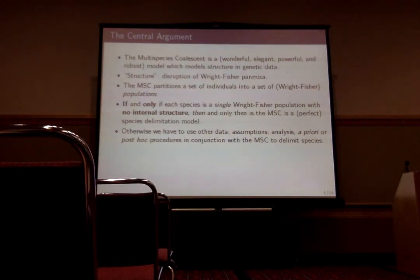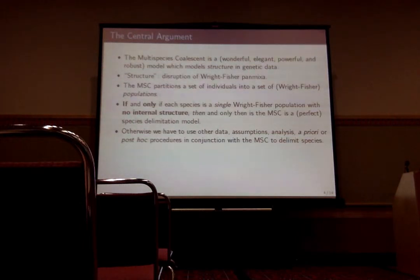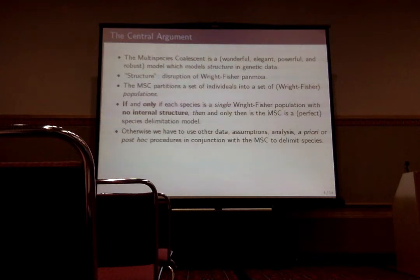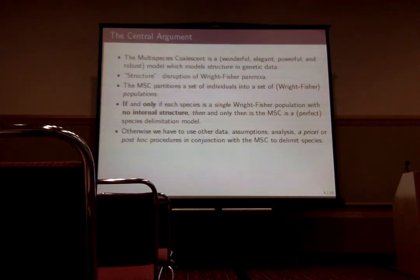The model models structure in genetic data, and 'structure' has a very precise, explicit definition here: disruption of random-mating panmixia. The multi-species coalescent partitions a set of individuals into a set of random-mating populations. If, and only if, your species are panmictic with absolutely no structure at all — and your data reflects that — only then can you consider the multi-species coalescent a perfect or clean species delimitation model. Otherwise, you have to use other data, assumptions, or analogies, either post-hoc or a priori, to go from MSC results to species delimitation.